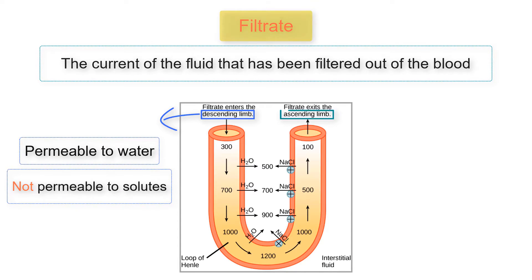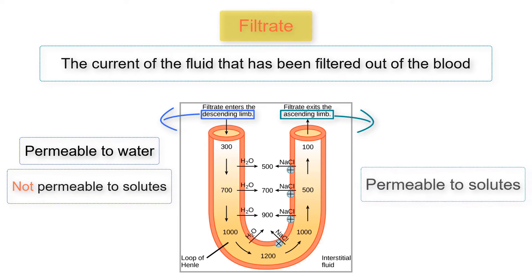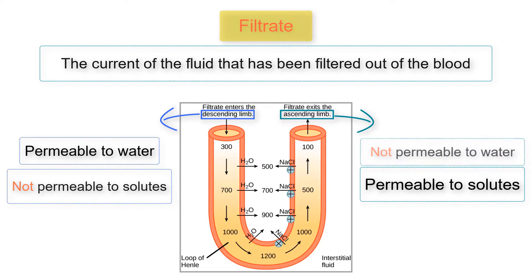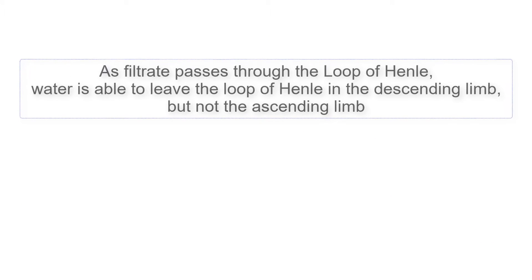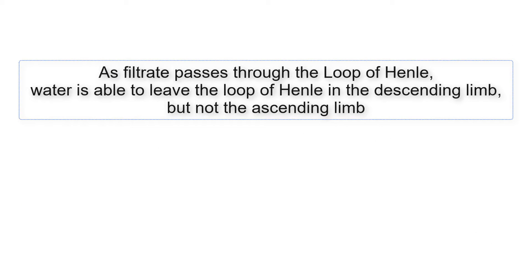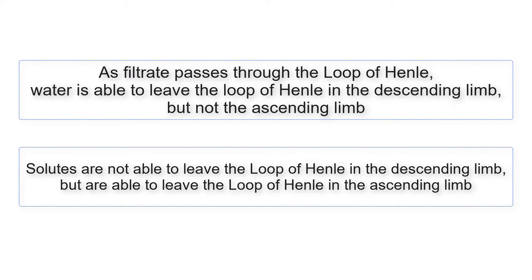The ascending limb, on the other hand, is permeable to solutes such as sodium ions, but is not permeable to water. This means that as filtrate passes through the loop of Henle, water is able to leave the loop of Henle in the descending limb but not the ascending limb. Solutes are not able to leave the loop of Henle in the descending limb, but are able to leave in the ascending limb.